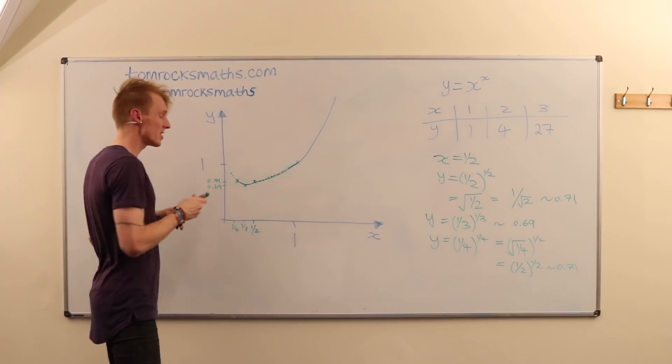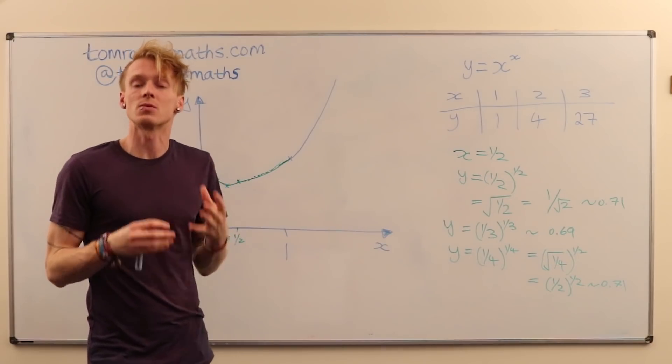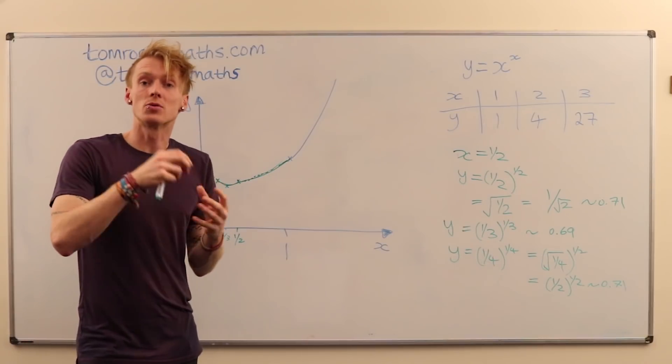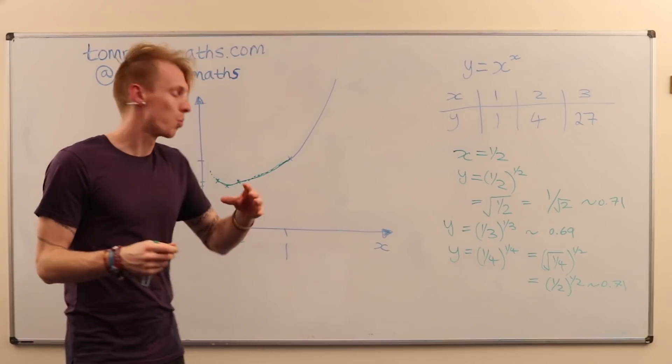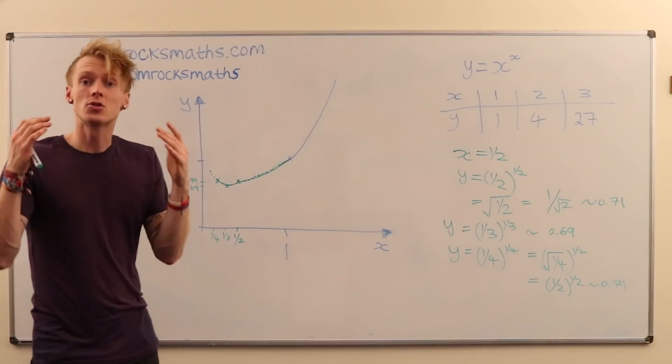And as x gets smaller and smaller, we start to see these points increasing. And the big question is, what is 0 to the power 0? What is this increasing towards?